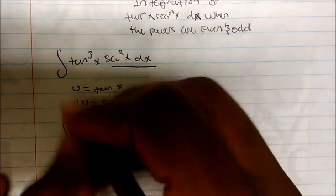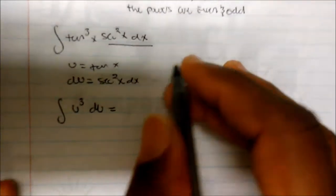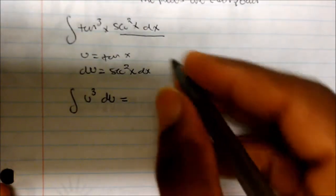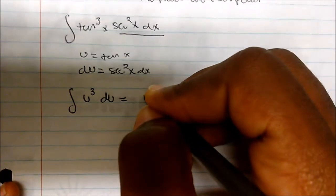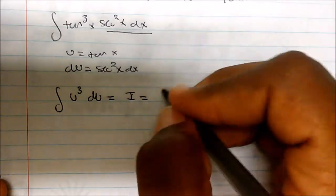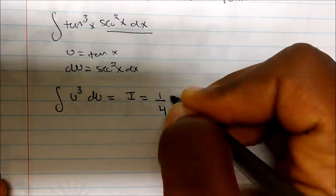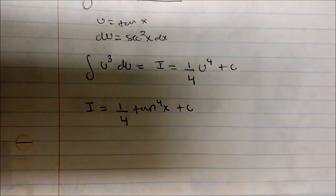And so this is a simple integral. So this will now be given as u cubed du. If I take the integral of that, that is going to be equivalent to 1/4 u to the 4th plus c. So we know in this case we're going to go using given by 1/4. What was our u tangent? So that becomes tangent to the 4th of x plus c.